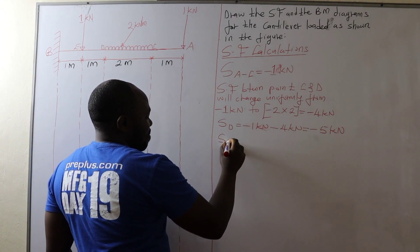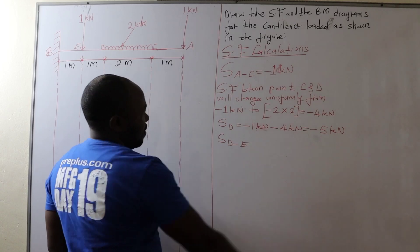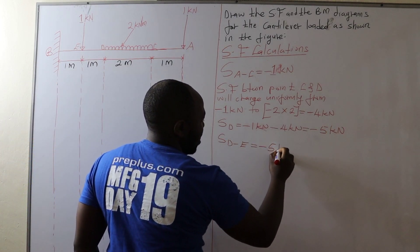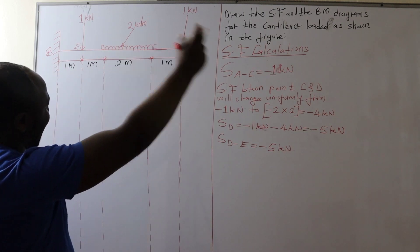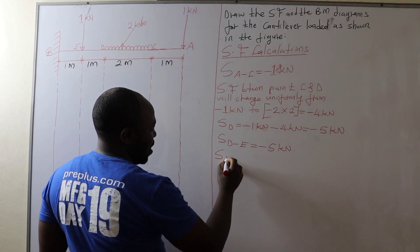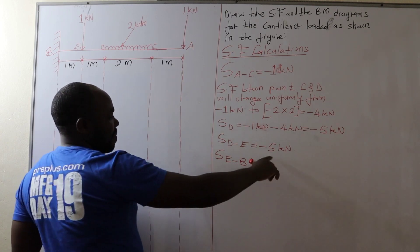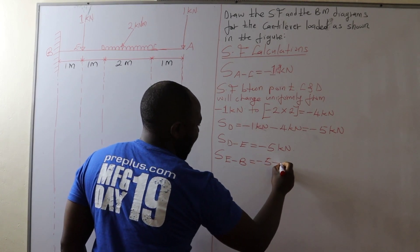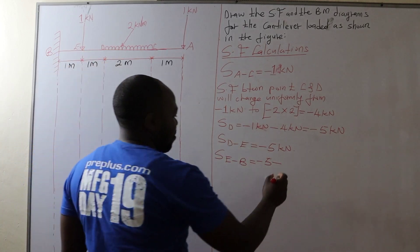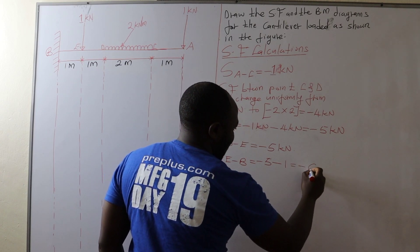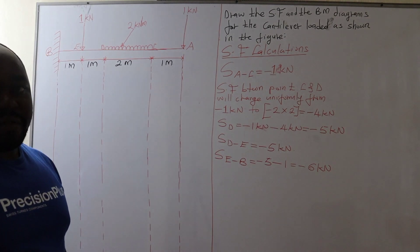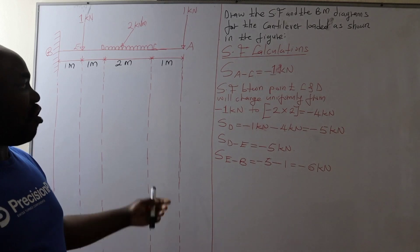Then from there we go to shear force between D and E. The shear force between D and E is going to be negative 5 kN, because it is the only value of shear force we have on the right-hand side between D and E. Then the shear force between point E and B is negative 5 kN plus negative 1 kN, which is the concentrated load at point E, giving us negative 6 kN.